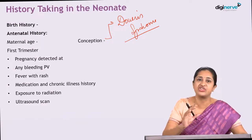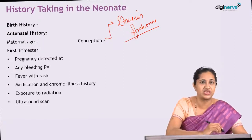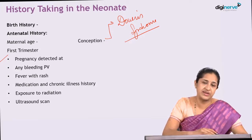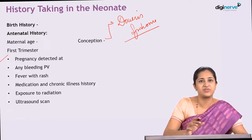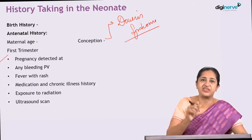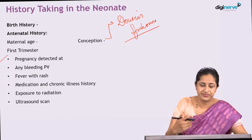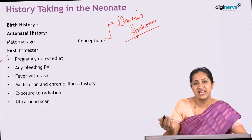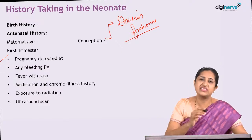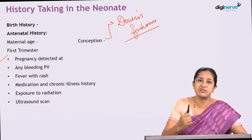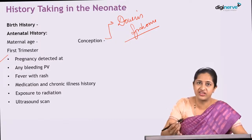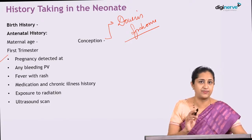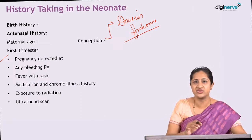In the first trimester history, the key question is when the pregnancy was detected — at one and a half months or only at 4 months amenorrhea. From a pediatric perspective, the phrase 'diagnosed by urine pregnancy test' is not very relevant. What matters is how long the mother was unaware of her pregnancy and may have been consuming other drugs or had not taken iron, folic acid, or calcium tablets. How the pregnancy was detected is not important to us.